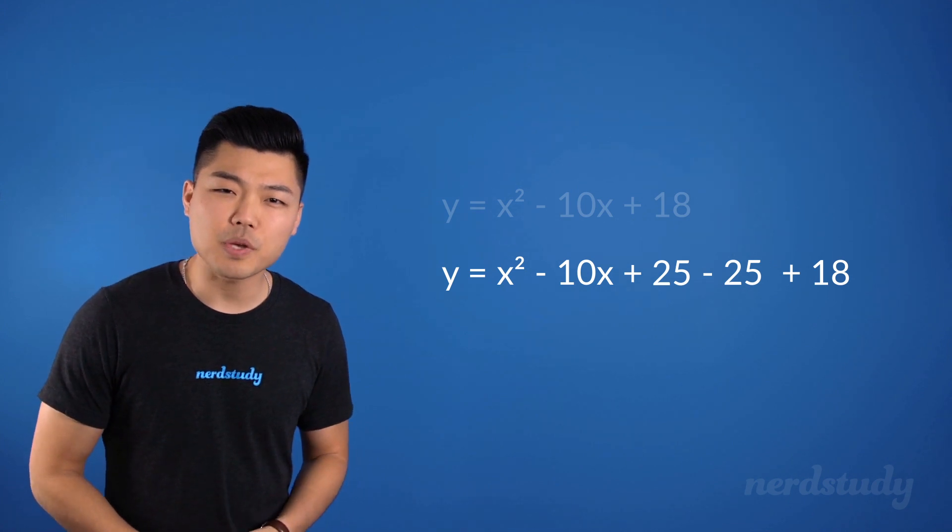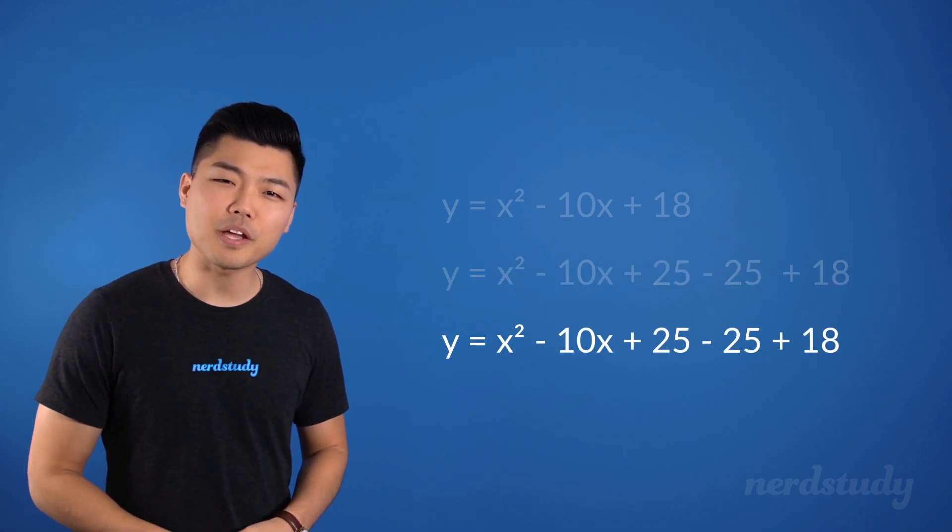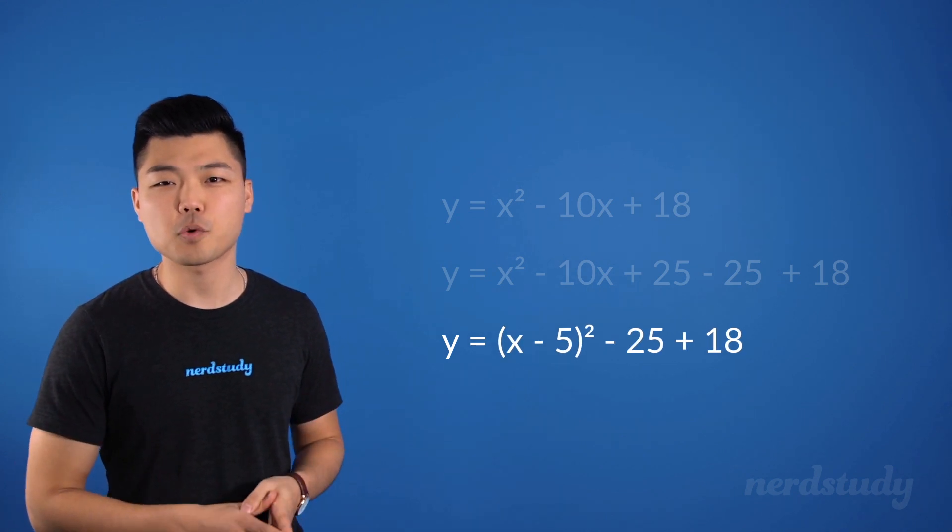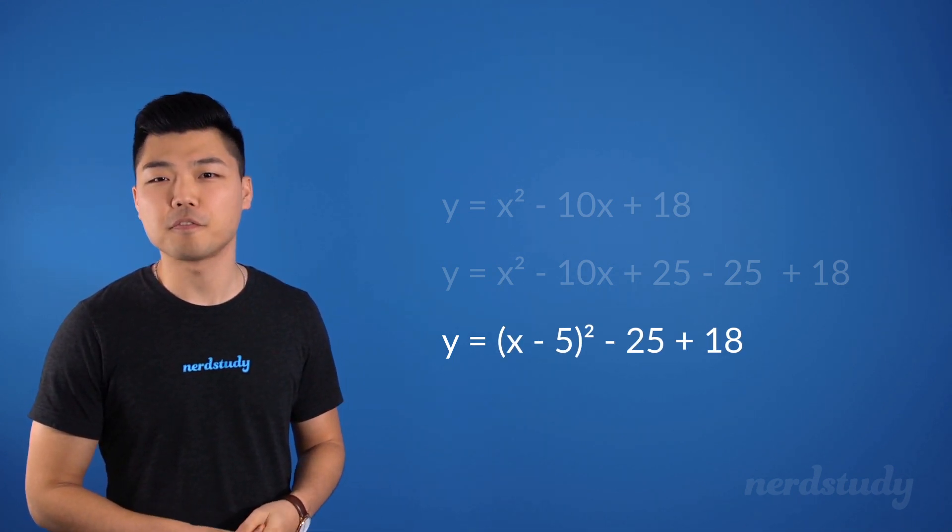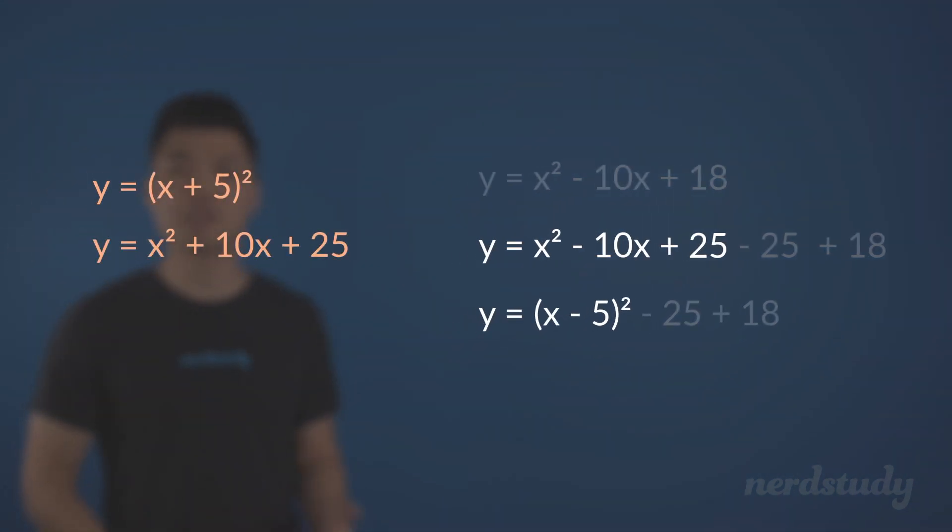This time, since we have a subtraction on this term here, we'll make sure we write (x - 5)² as our factored version of this part. Notice how it's not (x + 5)². That would be completely incorrect since if you expand it, you'd get x² + 10x + 25 and not x² - 10x + 25.